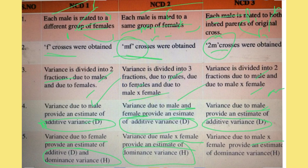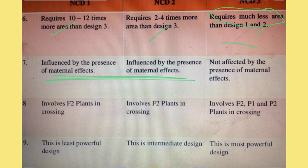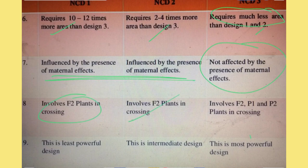NCD2 and NCD3 are similar in that male × female interaction gives dominance variance. NCD1 requires a large experimental area compared to NCD2 and NCD3; NCD3 is best because it requires the least experimental area. NCD1 and NCD2 are influenced by maternal effects, while NCD3 is free from all genetical assumptions. NCD1 and NCD2 involve only F2 plants in crossing, while NCD3 involves F2 plants for selection and P1 and P2 for backcrossing.